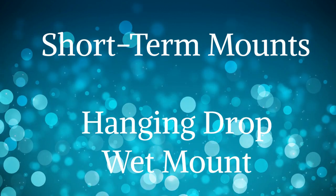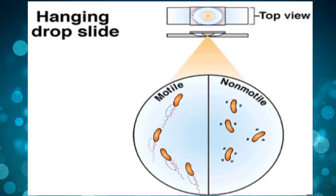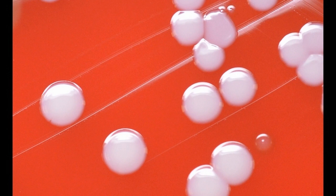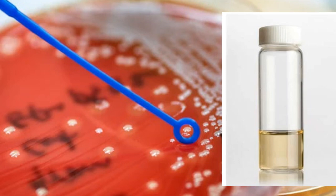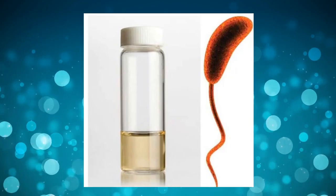We use short-term mounts to observe live bacteria in their natural state. These include wet mounts and hanging drop preparations — for details of hanging drop preparation, please see my earlier video. For short-term mounts, we prepare a liquid culture by picking part of a single bacterial colony and transferring it into peptone water in a test tube, mixing it well, then incubating it for two hours at 37 degrees Celsius.